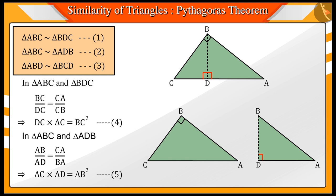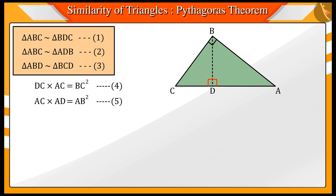Now if you add equation 4 and 5, we get DC times AC plus AC times AD equals BC square plus AB square.